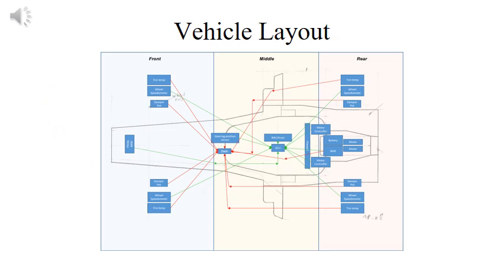We'll start out with a quick look at the vehicle layout. As you can see in the slide, we've divided the car into three sections: the front, the middle, and the rear. Everything you see in green is communicating to the ECU on a protocol called CAN, which stands for controller area network. Everything you see in red will be communicating with the dash, primarily just for data logging for future performance references.